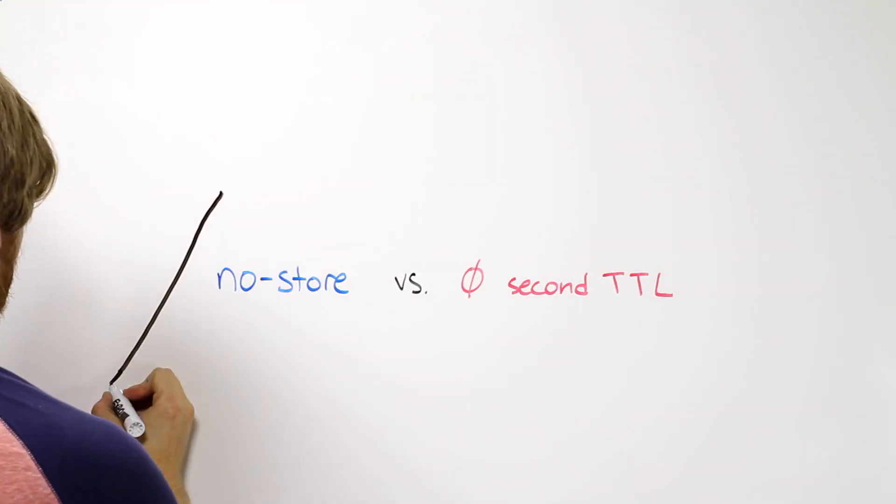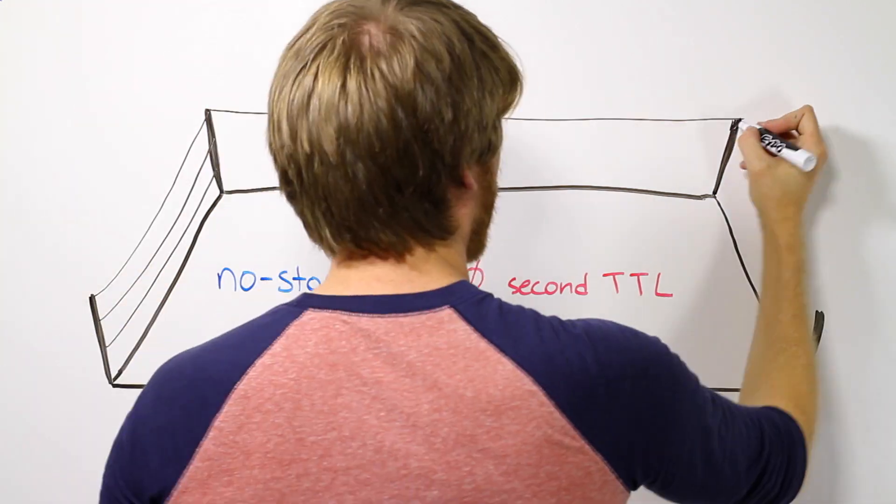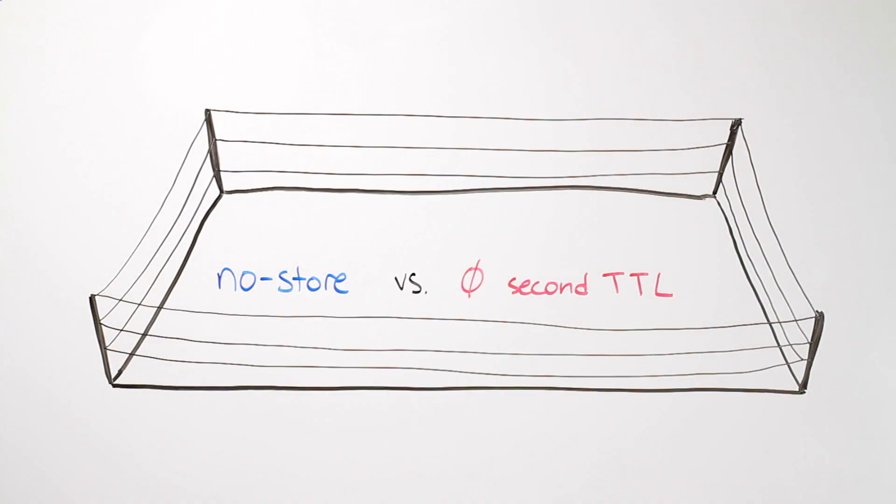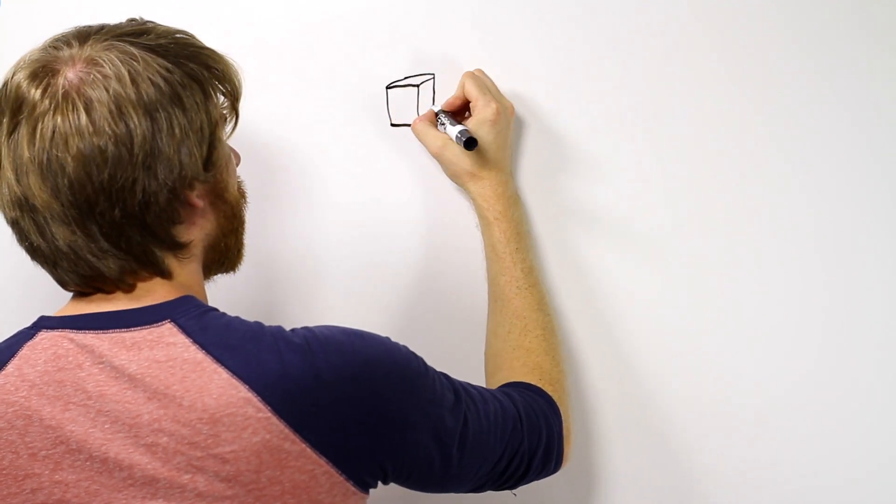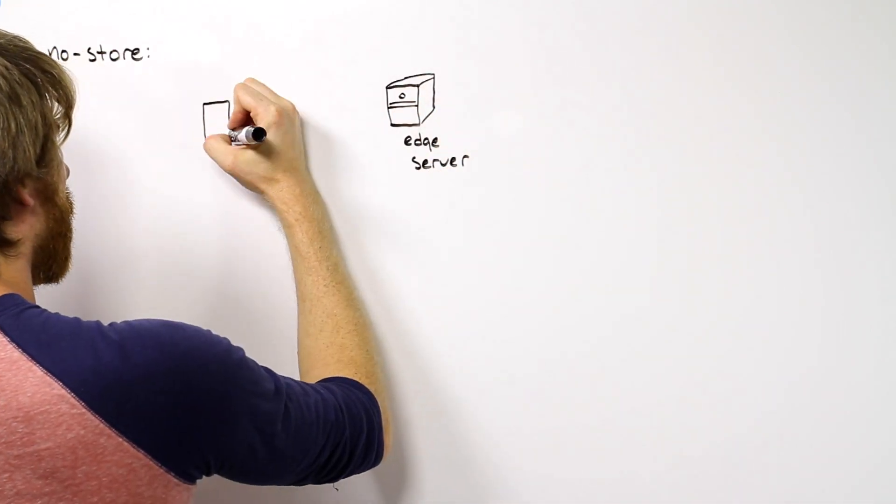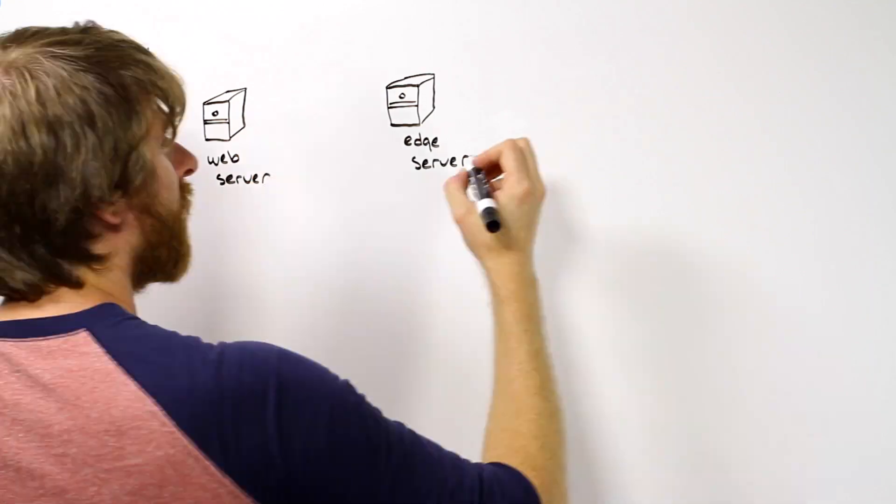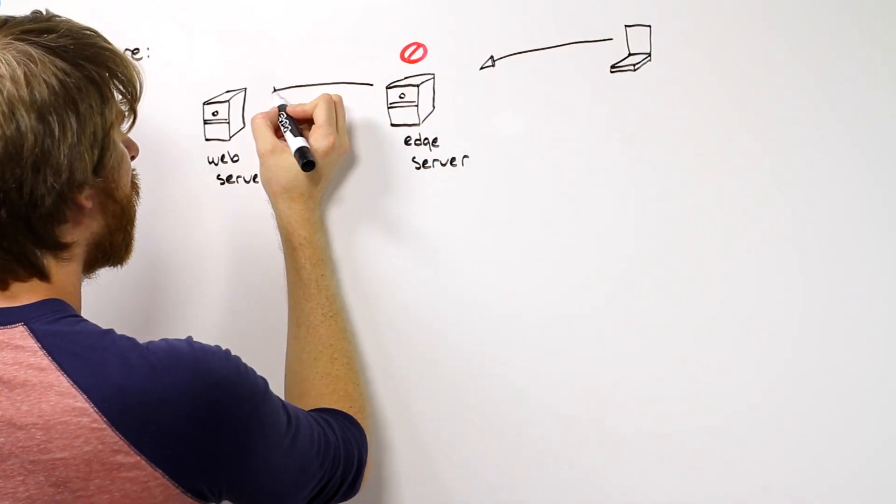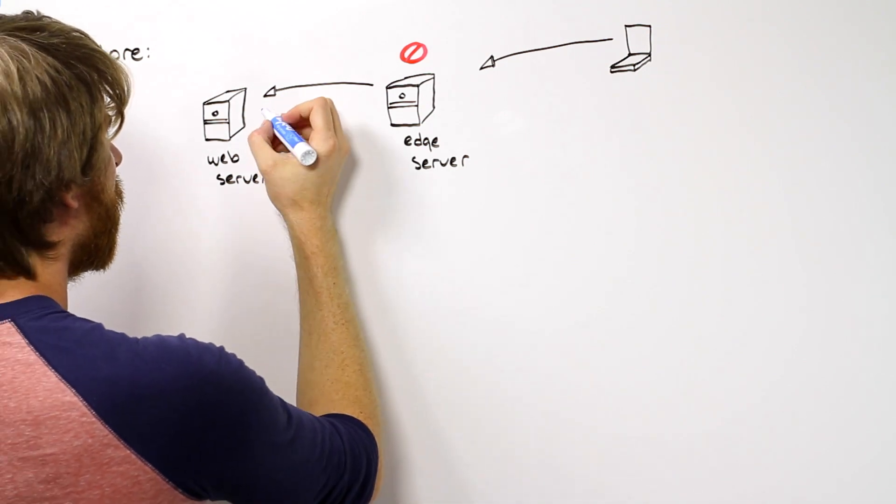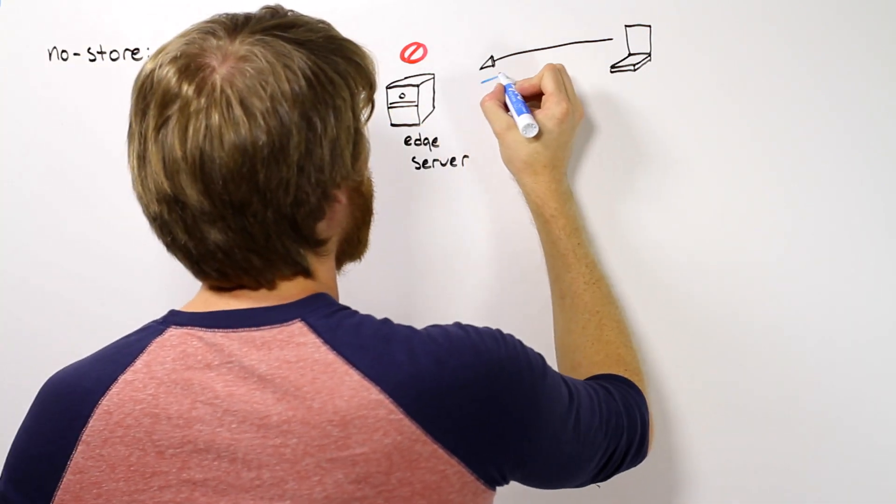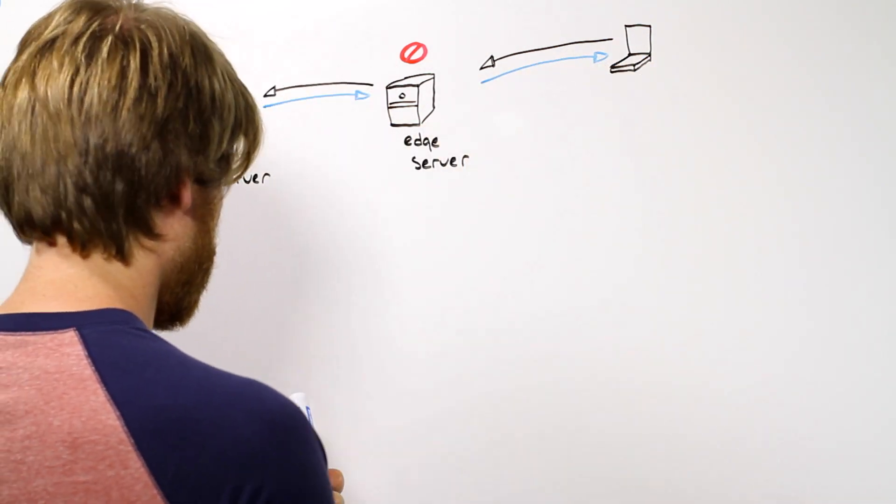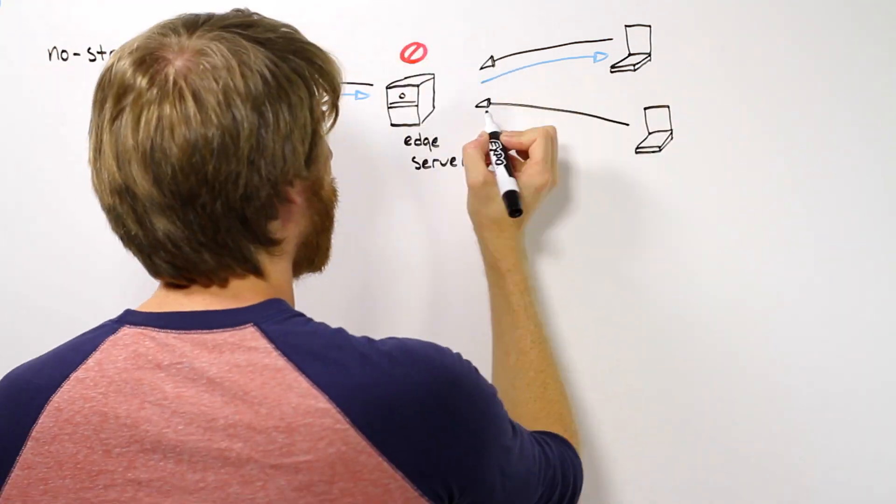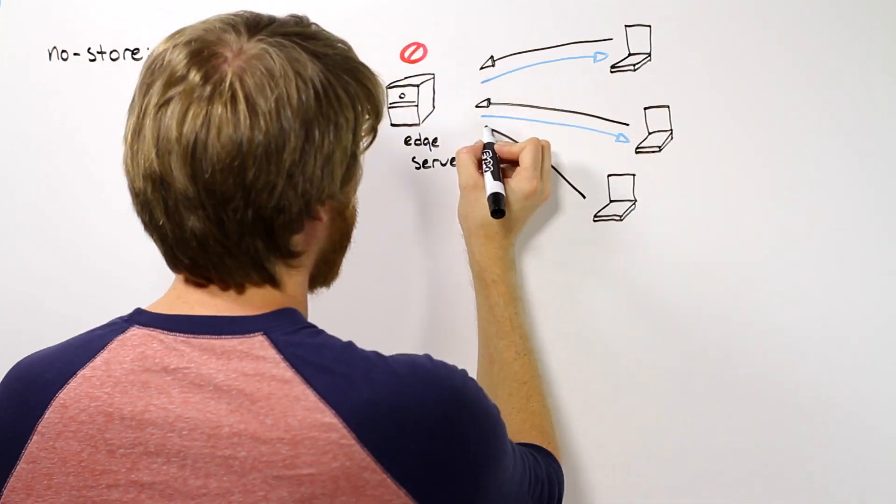Lastly, let's explore the concept of no store versus a zero-second TTL. This gets a little technical. When your config is set to no store, the edge server is instructed to not cache. This means that every request the edge server receives is forwarded onto your web server. Since the edge server doesn't have the file in cache, a complete response, including the body, is provided by your web server. This results in excess bandwidth and resources being used.